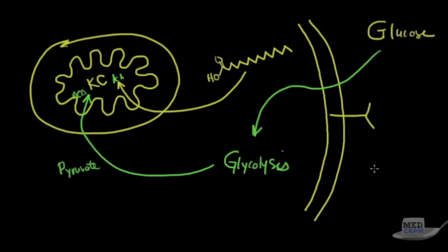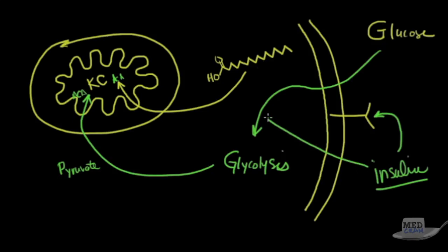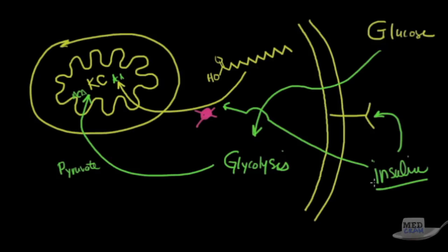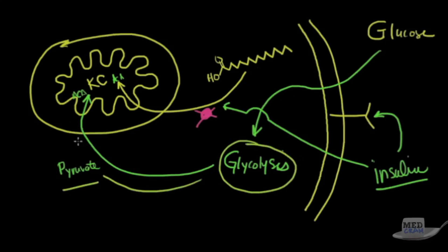In the normal situation, you've got insulin binding to its receptor, and insulin also prevents fatty acids from moving into the cell for beta-oxidation. So in the normal situation, insulin hits a receptor, causing glucose to go into the cell. Glycolysis occurs, the end result is pyruvate. Pyruvate then moves into the mitochondria. Krebs cycle occurs, and you get ATP.